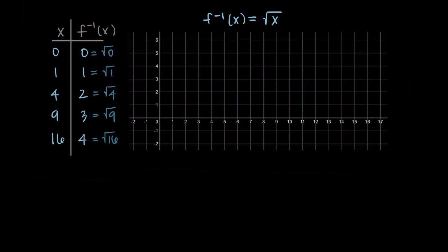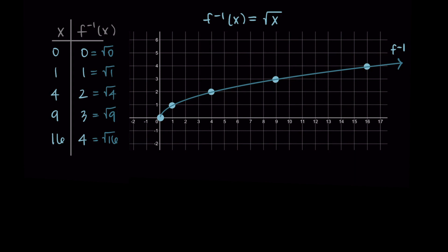If we go to graph this, we should be able to put in these new points. I have zero zero, one one, four two, nine three, and sixteen four. Our radical function has this shape here that goes through these points.